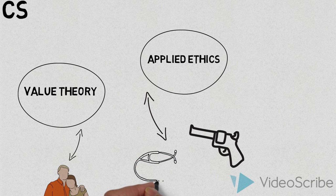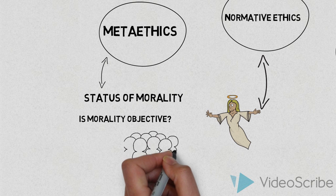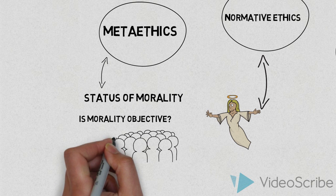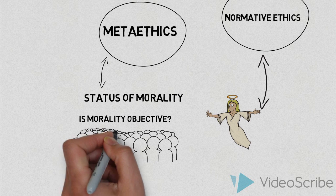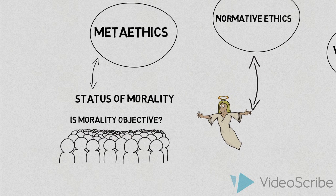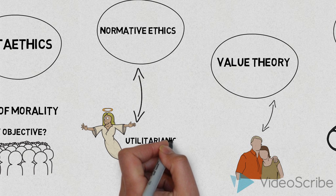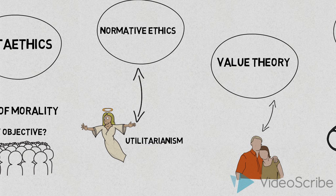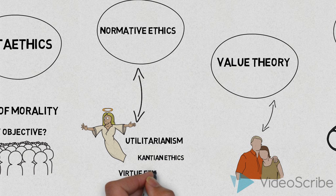Each section of this video series corresponds to one of the four subfields of ethics. We'll start by investigating the metaethical issue of whether moral norms are objective or universal, or if they're valid relative to culture. In the section on normative ethics, we'll look at a number of moral theories, including utilitarianism, Kantian ethics, virtue ethics, and social contract theory.